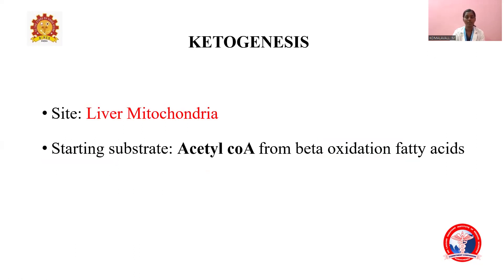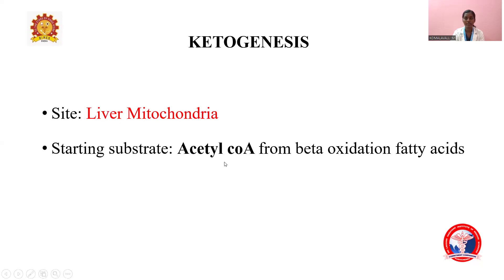Ketogenesis means formation of new ketone bodies. Ketogenesis occurs in liver mitochondria. The starting substrate for ketogenesis is acetyl-CoA. We get this acetyl-CoA from the beta-oxidation process — beta-oxidation of fatty acids occurs in the mitochondria, and the product formed at the end of beta-oxidation is acetyl-CoA, which is then channeled into ketogenesis in the liver mitochondria.